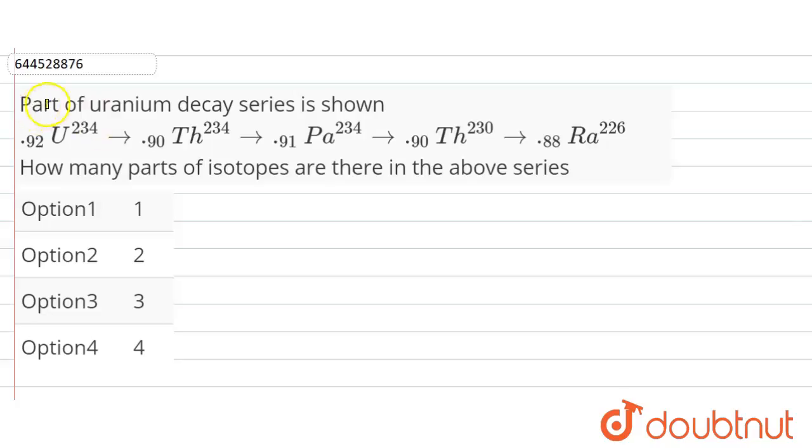Hello friends, the question is here. Part of the uranium decay series is shown: Uranium-234 with atomic number 92, Thorium-234 with atomic number 90, Palladium-234 with atomic number 91, Thorium-230 with atomic number 90, and Radium-226 with atomic number 88.